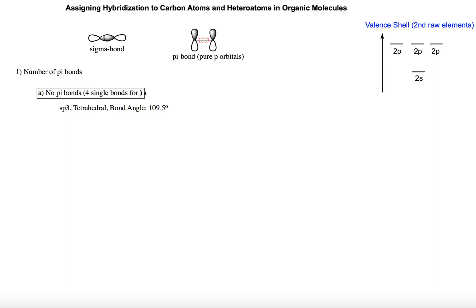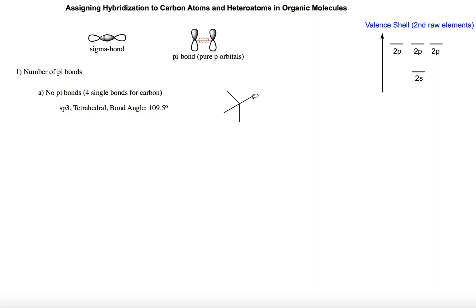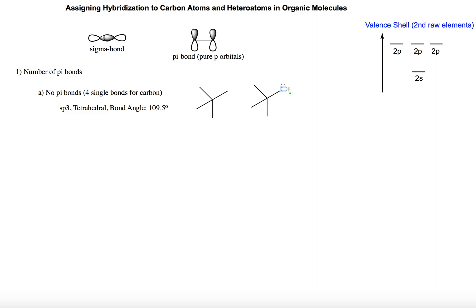For example, consider a five-carbon molecule with all single bonds. We have one, two, three, four, five carbons, and since all of them have only single bonds, every carbon atom in this molecule is SP3 hybridized. Now if we add a hydroxyl functional group to the molecule, we need to complete the lone pairs on the oxygen. If we assign hybridization, none of the carbons have pi bonds — they are all SP3. What about the oxygen? The oxygen atom has no pi bonds whatsoever, so it is also SP3 hybridized.